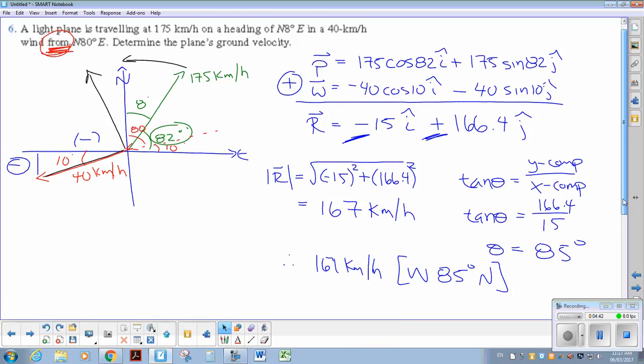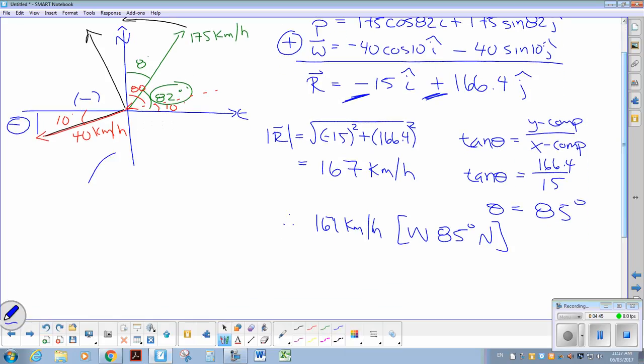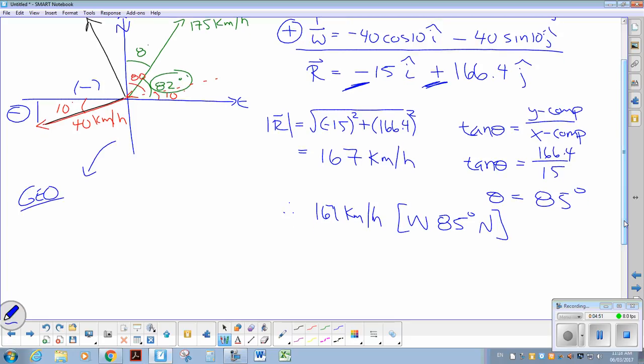To do it geometrically, for this one, so if I draw the triangle for you again, the triangle would look like this. So here's the plane heading at 175 kilometers an hour with an angle of 82 to the horizontal. Then the wind vector would come in, and we'll go this direction at an angle of 10 degrees.